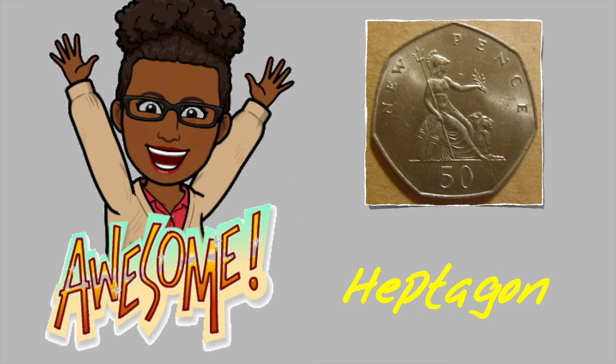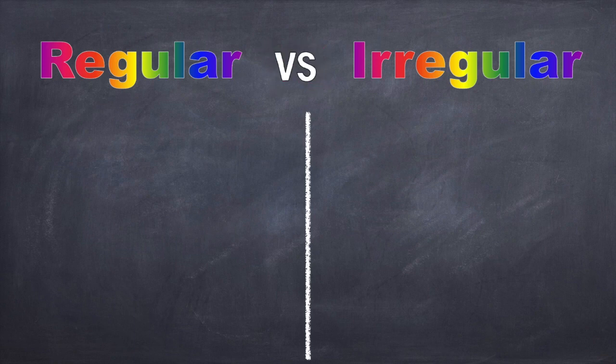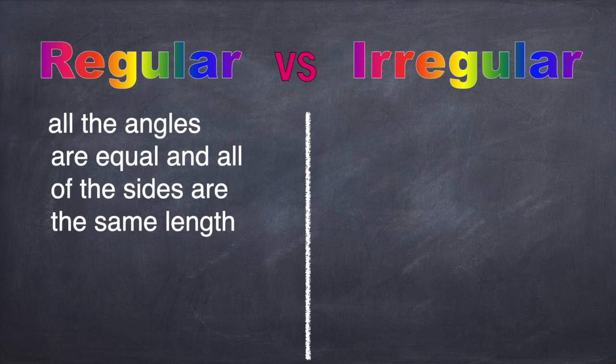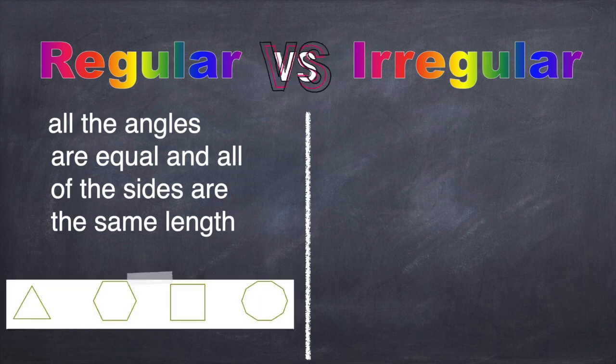Now that you know all about polygons, what they are and how to name them, from three sided polygons to ten sided polygons, let's take a look at the difference between a regular versus irregular polygon. A regular polygon has all the angles equal and all the sides are the same length. They look something like this.